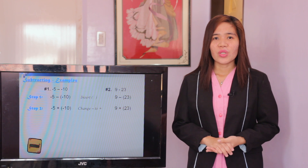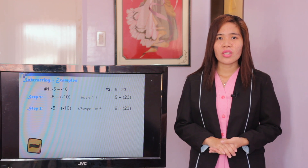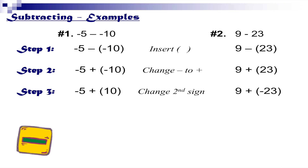Let's check the process for examples number 1 and 2. Step 1, insert open and close parentheses around negative 10 and positive 23. Step 2, change the subtraction sign to an addition sign. Step 3, change the second sign, so it becomes positive 10 and negative 23. Step 4, follow the adding rules. The final answer for number 1 is positive 5, and the final answer for number 2 is negative 14.